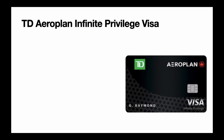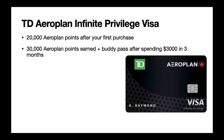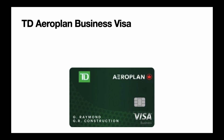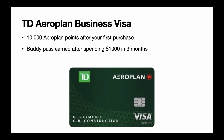Next is the TD Aeroplan Infinite Visa Privilege card. This card gives you 20,000 Aeroplan points after your first purchase, and 30,000 Aeroplan points plus a buddy pass after spending $3,000 in your first three months. This is a premium-level Aeroplan credit card with a $599 annual fee. Next is the TD Aeroplan Business Visa card. This card gives you 10,000 Aeroplan points after your first purchase, a buddy pass after spending $1,000 within the first three months, and has a $149 annual fee rebated for the first year.